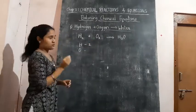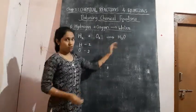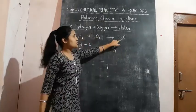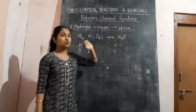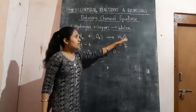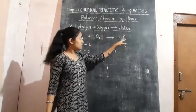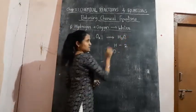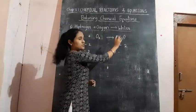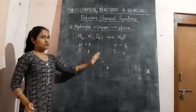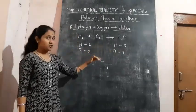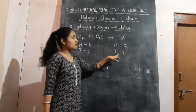H₂ means two hydrogen atoms are there, so the hydrogen count is 2, and oxygen count is also 2. In H₂O on the product side, there are two atoms of hydrogen, so we write 2. For oxygen in H₂O — if no number is given after an element, you consider it as 1. So oxygen on the product side is 1. Now compare both sides: on the reactant side H is 2 and on the product side H is also 2, so hydrogen is balanced. But oxygen is 2 on the reactant side and 1 on the product side — so oxygen is not balanced.